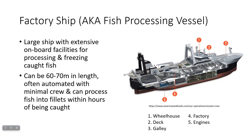Factory ships — also called fish processing vessels — are large, highly automated ships that can not only catch fish but also process them: deboning, descaling, filleting, and freezing them, readying them for packaging. Once they reach shore, the processed fish just needs to be offloaded and shipped. These ships are 60 to 70 meters in length, can process fish into fillets within a few hours, and can stay at sea for up to a month and a half to two months.